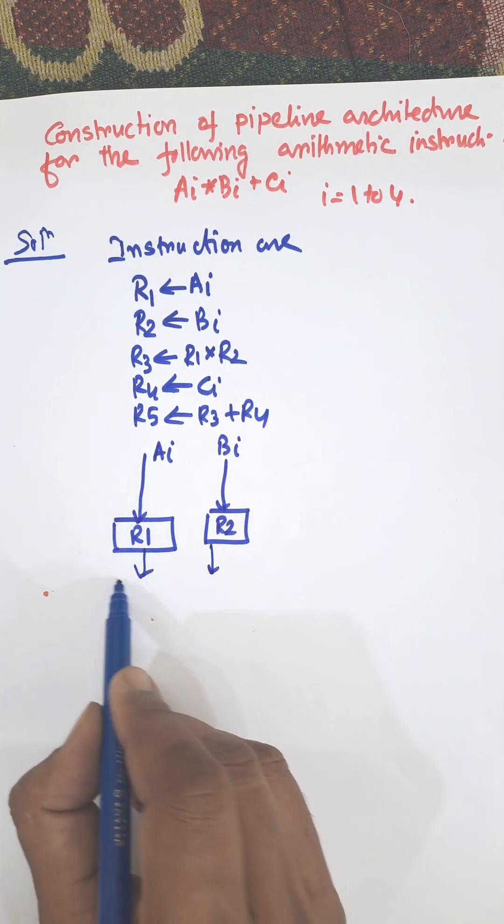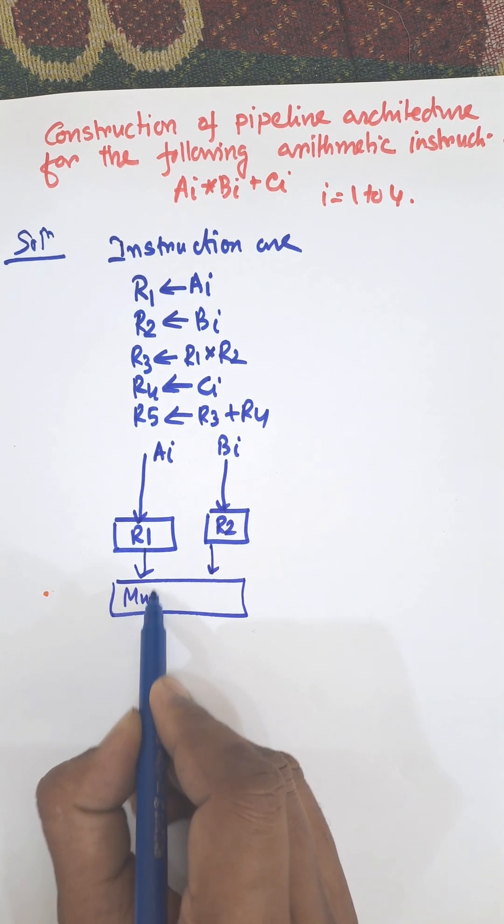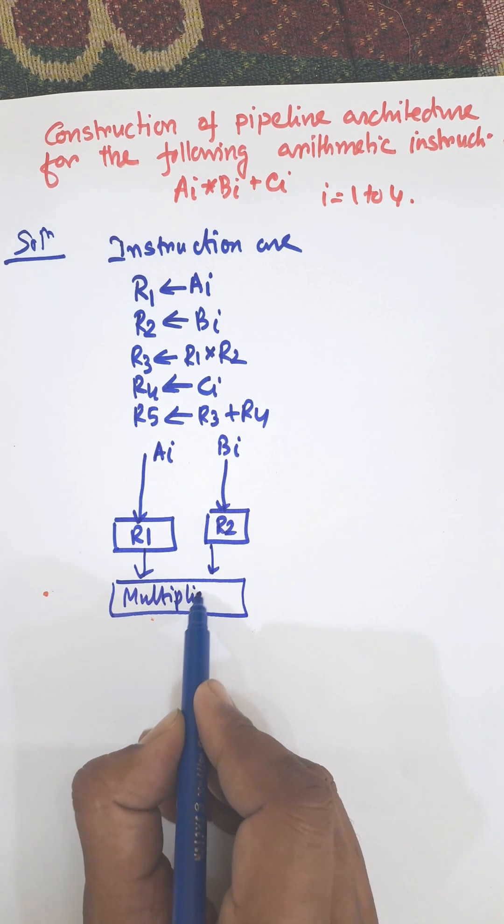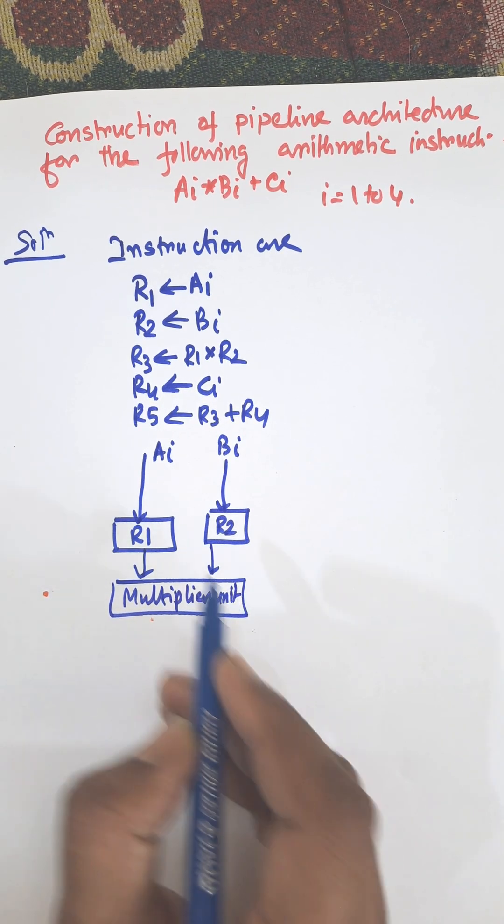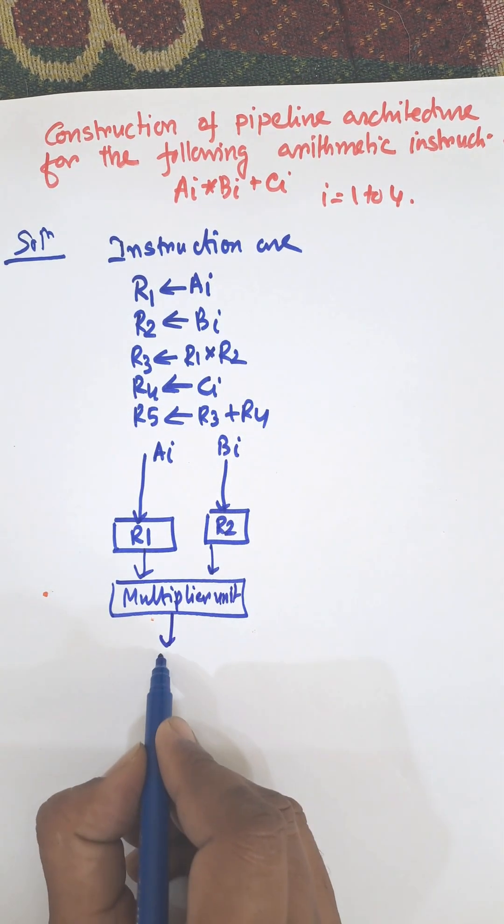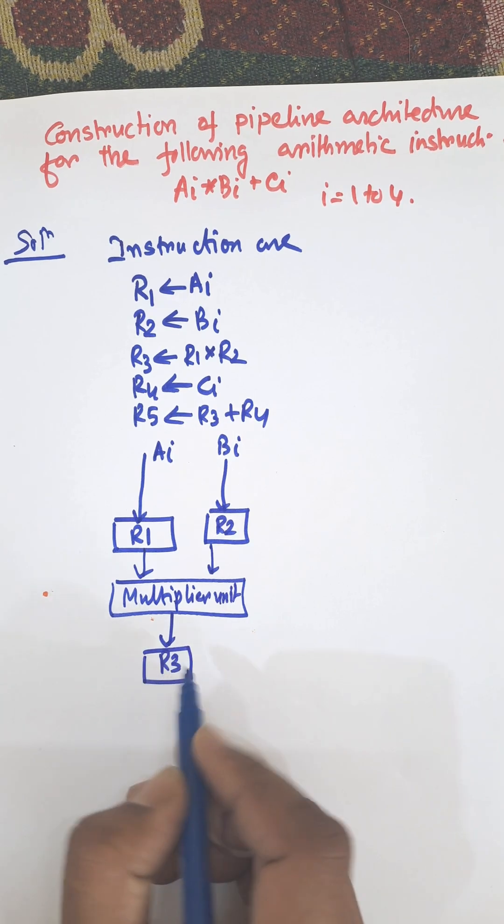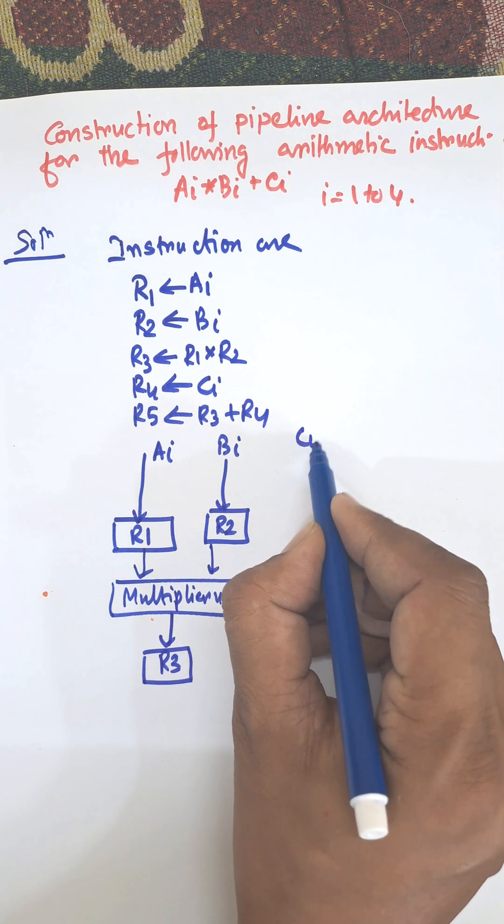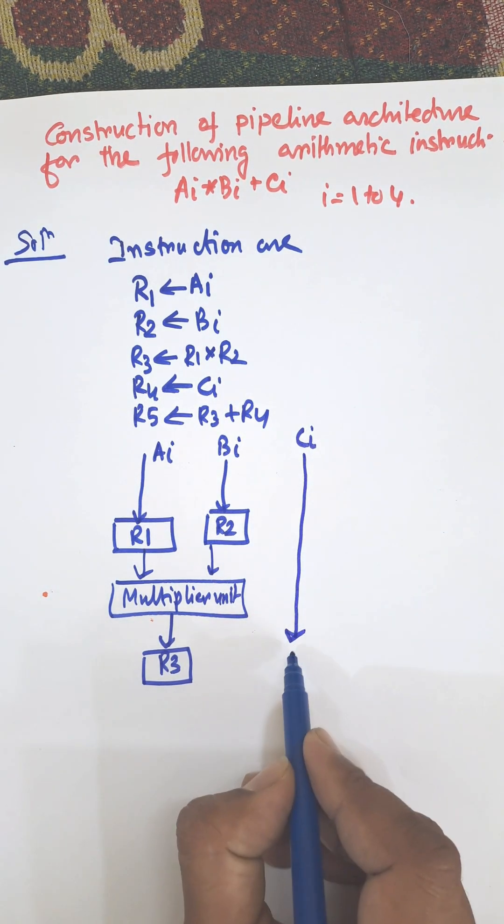The result is transferred to r3 register, and in this moment we need to load ci into r4 register.